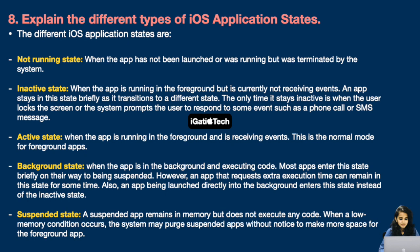Next, inactive state — when the app is running in the foreground but is currently not receiving events. An app stays in this state briefly as it transitions to a different state. The only time it stays inactive is when the user locks the screen or the system prompts the user to respond to some event such as a phone call or SMS message. Next is active state — when the app is running in the foreground and is receiving events. This is the normal mode for foreground apps.